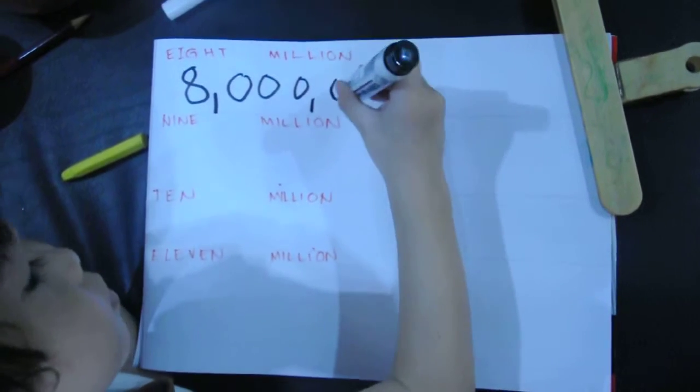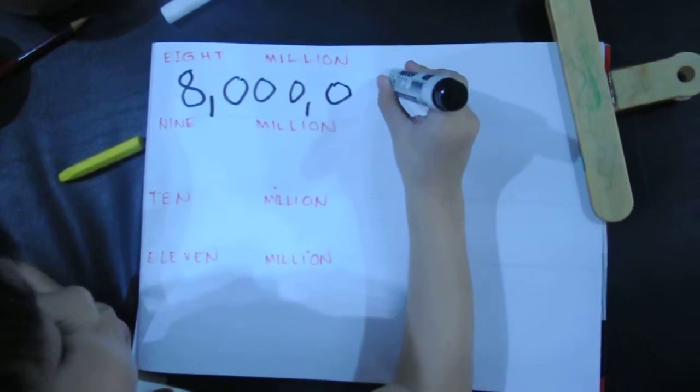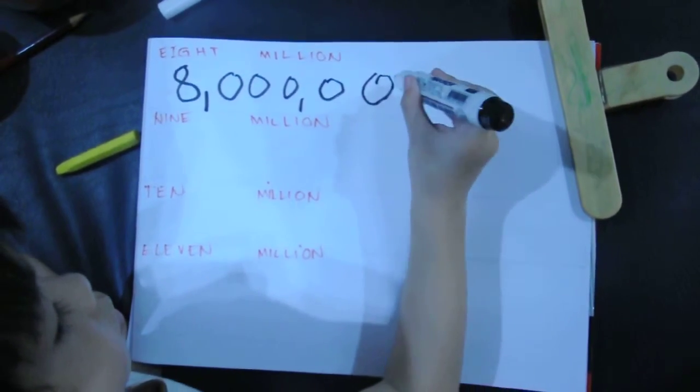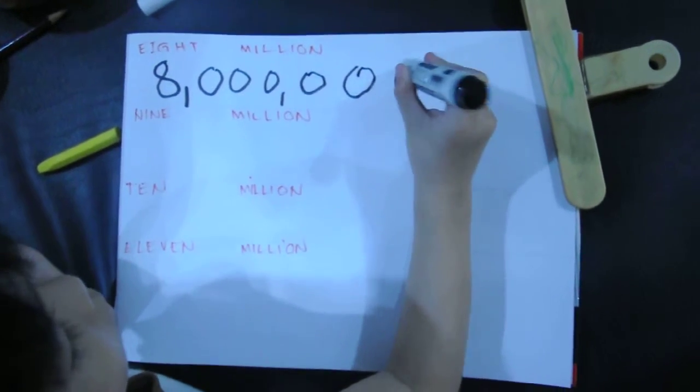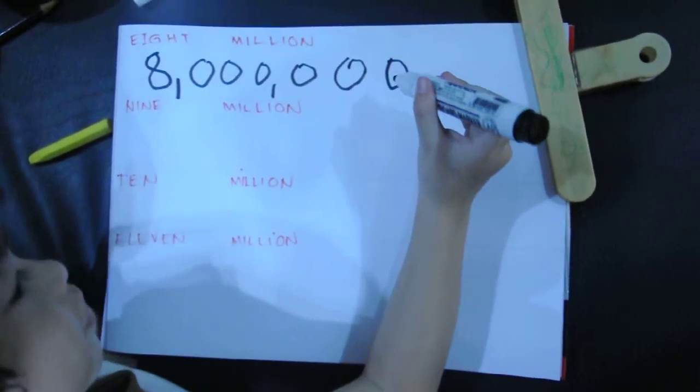Very good. Ethan is writing the numbers, but it's not ordinary numbers. These are millions. Eight million. Very good. Next.